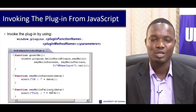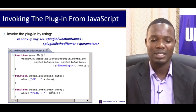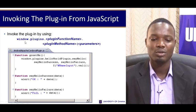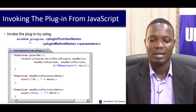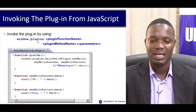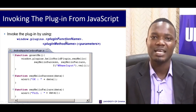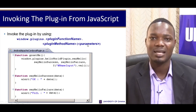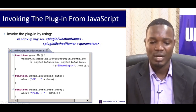After you are done with that, you would want to use the plugin in your application, so you would need to invoke the plugin from JavaScript. You can invoke the plugin by using the Apache Cordova objects. Here we have window.plugins, then the plugin function name, followed by the plugin method name, then you pass the parameters.